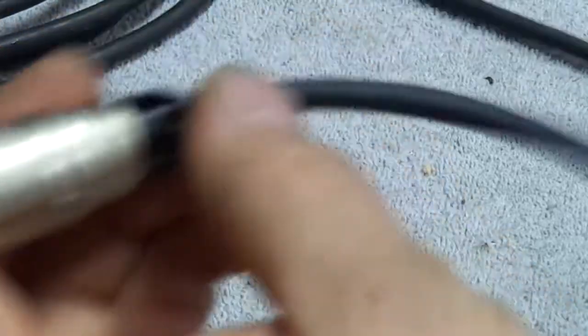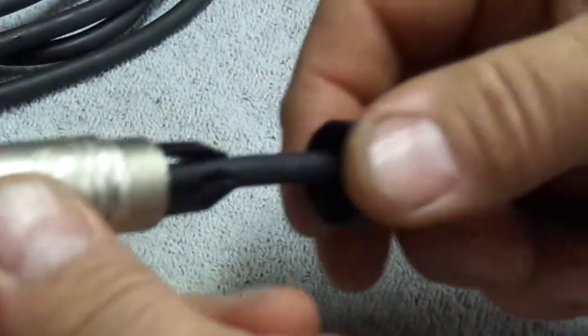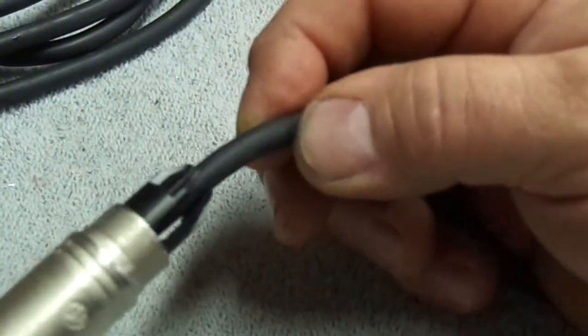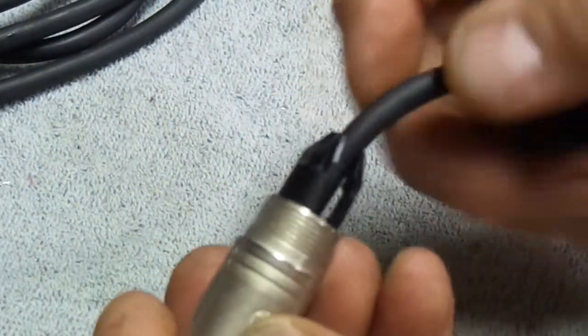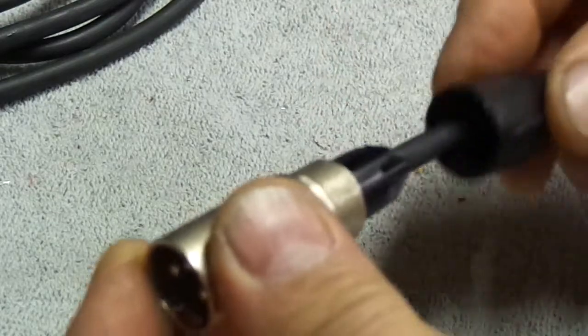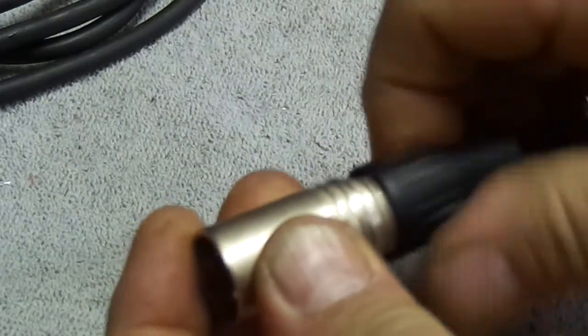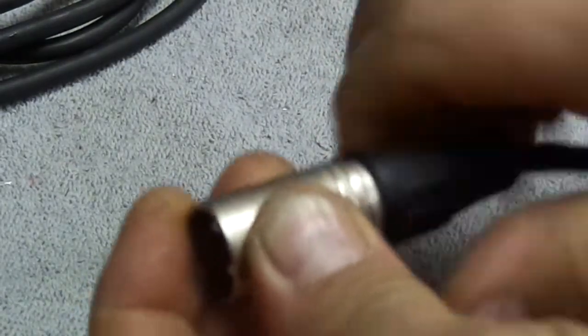Then, this is what I like about the Neutrik connectors because as you tighten down, this part right here grips onto the cable real tight. And that's a great strain relief. The best strain relief I've seen yet. So, tighten this down. And we'll zoom the camera out.